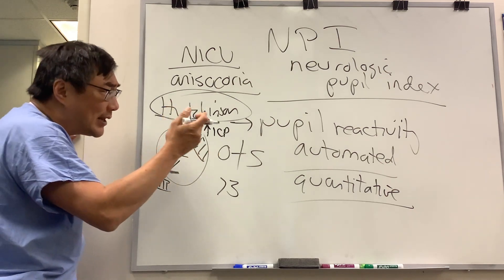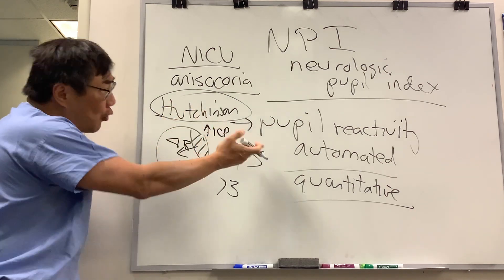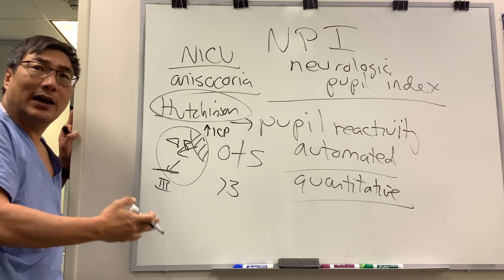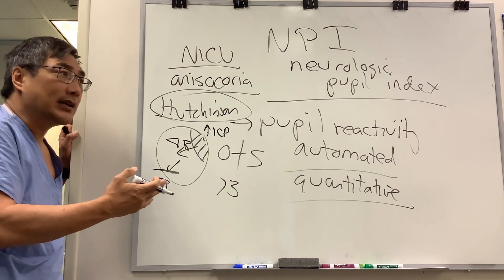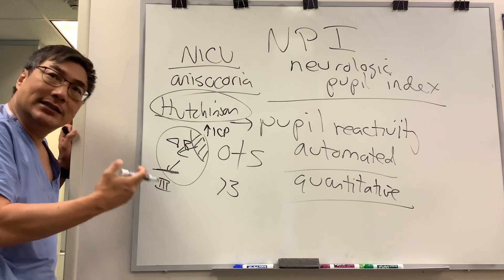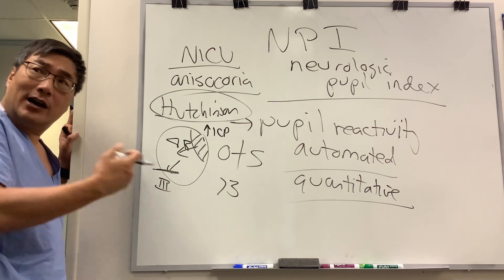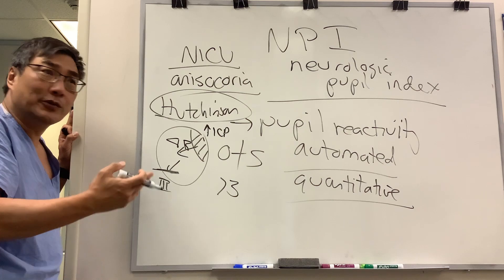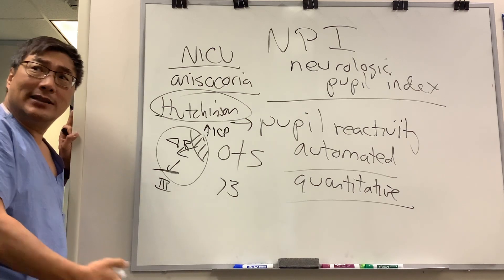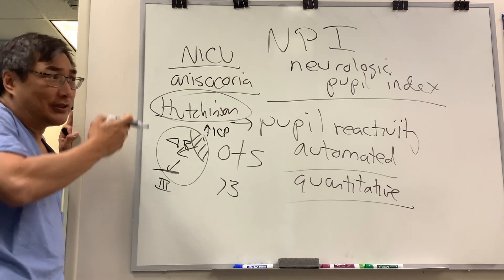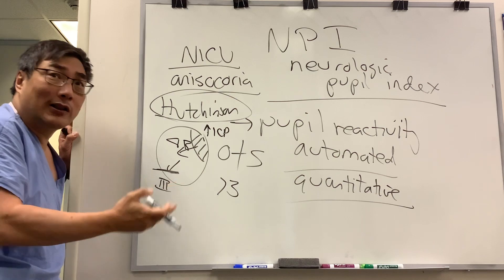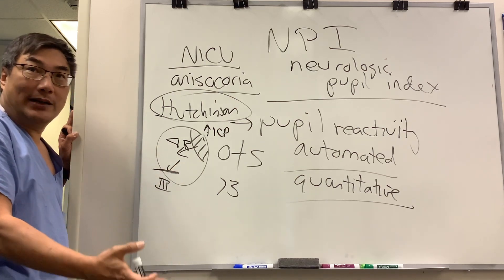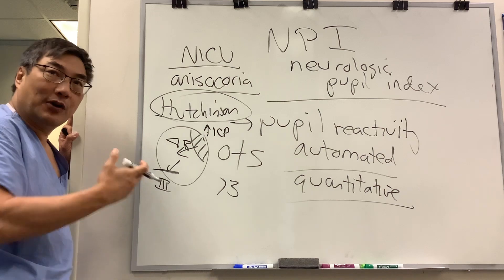The problem with assessing reactivity — whether manually or with an automated machine — is that so many things cause the pupil to have less reactivity. Reactivity can be impacted by drugs; a lot of medications used in the ICU can make pupils smaller. Pain medicines and opioids mean many patients just have small, poorly reactive pupils, which doesn't tell you anything about what's happening in their brain because it's pharmacologic.